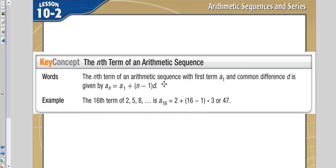You'd plug 97 in here and solve. And let's say the difference is 5, you'd have 97 minus 1, which is 96. You'd multiply that by 5 and add it to the first term and you'll be able to find the 97th term.